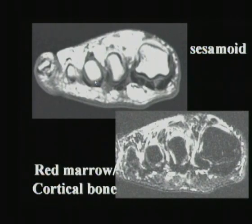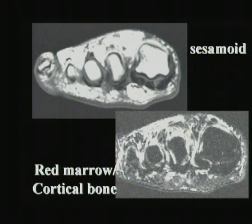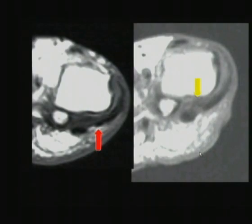Here is a more florid example. On T1-weighted imaging, we see no normal marrow signal in either sesamoid, and on T2-weighted imaging, we continue to see no normal marrow. In my opinion, that is hypertrophy from chronic stress. I don't know if it's truly normal, but I am quite convinced that it is asymptomatic.